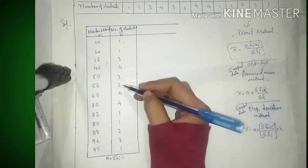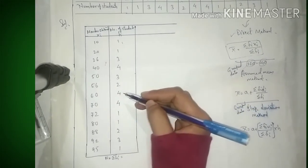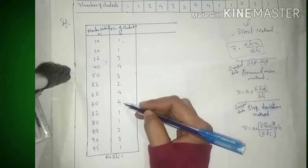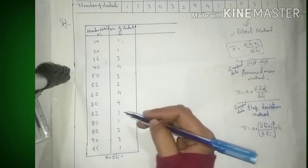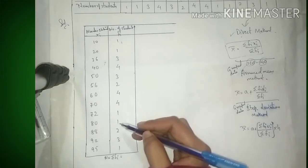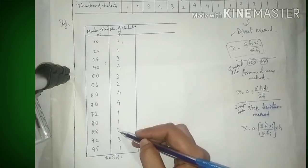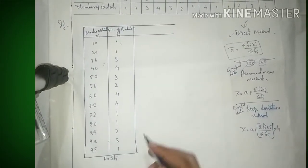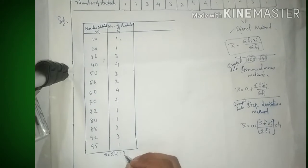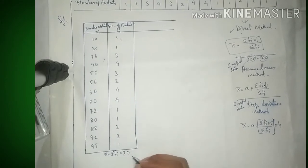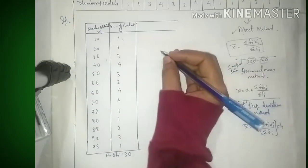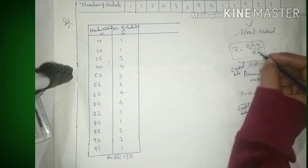सबको add करो: 1 + 3 + 5 = 9, 9 + 3 = 12, 12 + 2 = 14, 14 + 4 = 18, 18 + 4 = 22, 22 + 1 = 23... total Σfi = 30। तो n = 30 आ गया।